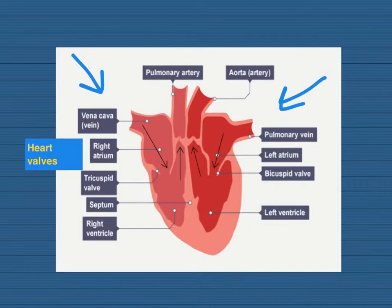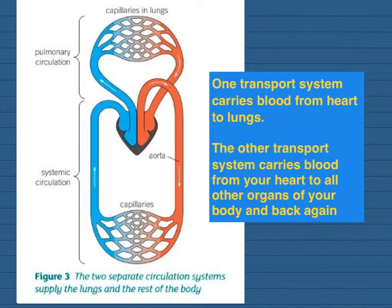It's really important that you know this: the names of the heart valves are not required — you can just call them heart valves. You'll also need to know about the coronary arteries found on the outside of the heart, as they're very important when discussing coronary heart disease. In humans and other mammals, blood vessels are arranged into a double circulatory system — one carries blood from the heart to the lungs, and the other carries blood to all other organs and back.